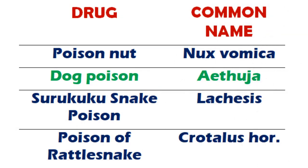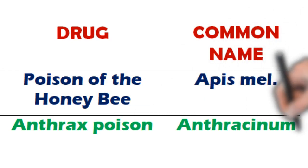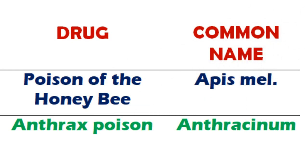Poison nut is the common name of Nux vomica. Dog poison is the common name of Aethusa. Surucucu snake poison is the common name of Lachesis mutus. Poison of rattlesnake is the common name of Crotalus horridus. Poison of the honeybee is the common name of Apis mellifica.